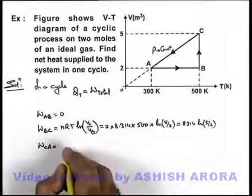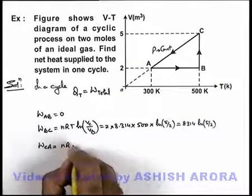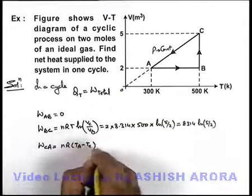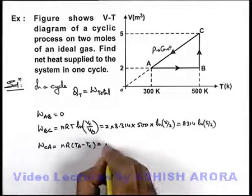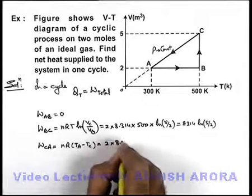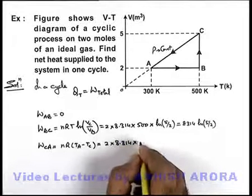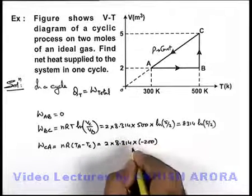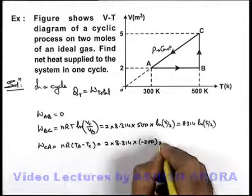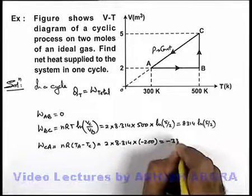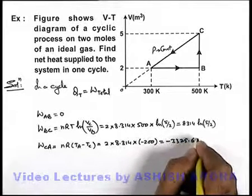For constant pressure, the work done can be written as nR(Ta - Tc). So this will give us 2 into 8.314 multiplied by Ta minus Tc, which is minus 200, the change in temperature from C to A. On simplifying, this will give us minus 3325.6 joules.